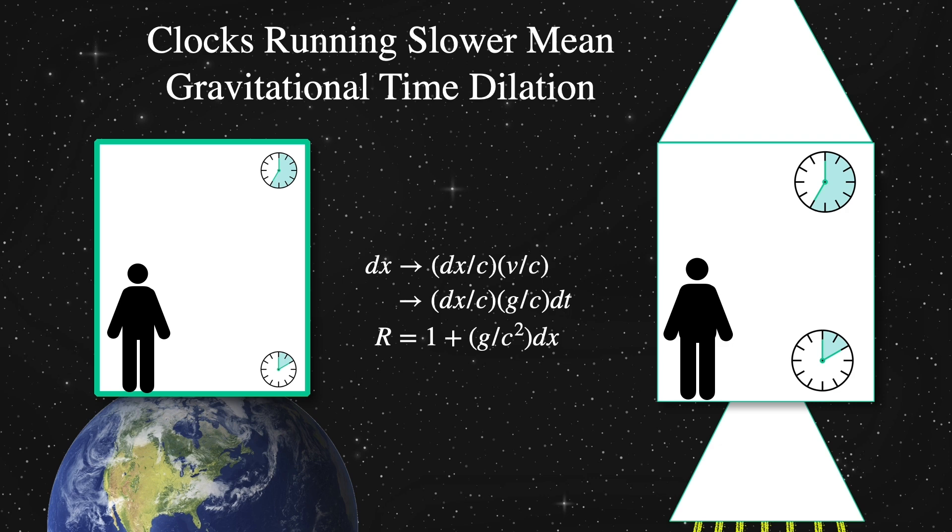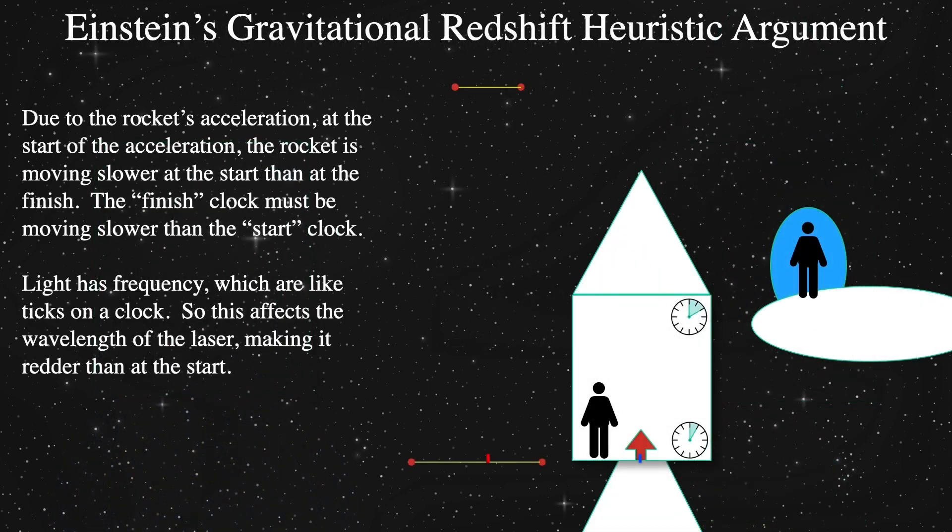Yes, that means clocks high up in orbit around the Earth run slower than those on the ground. And this has to be taken into account for GPS satellites. If it weren't, the satellites would be wrong by a meter within minutes, and they'd be off by miles very soon thereafter.